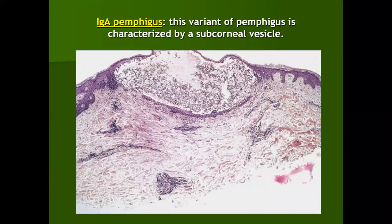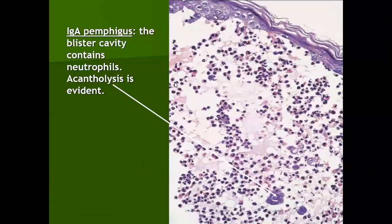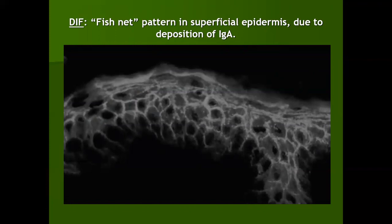IgA pemphigus is a variant characterized by subcorneal vesicles filled with neutrophils. It presents clinically as vesicles and pustules arranged in an arcuate or annular configuration. Since these are subcorneal vesicles, the vesicles and pustules are quite flaccid and rupture easily. There is a subcorneal split filled with neutrophils and acantholytic cells. The difference in immunofluorescence from pemphigus foliaceous is that in IgA pemphigus, the antibodies deposited at the desmosomal junctions will be IgA and not IgG.